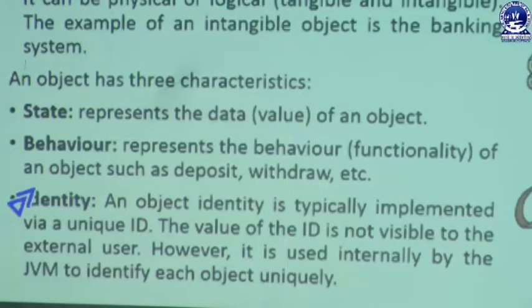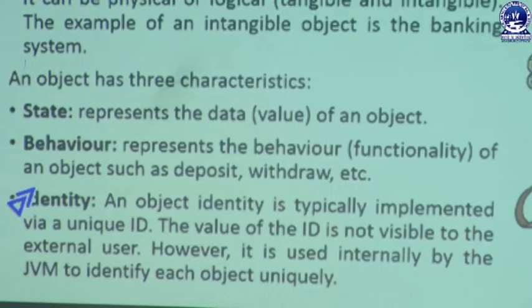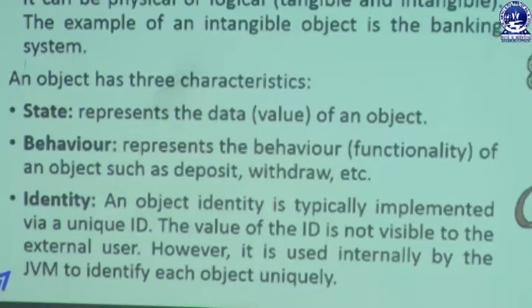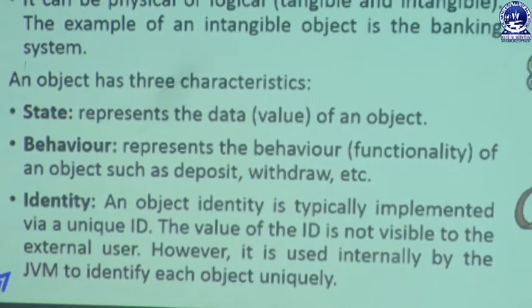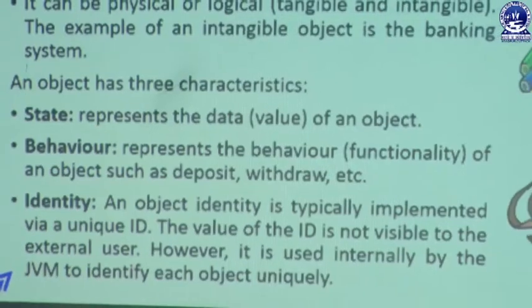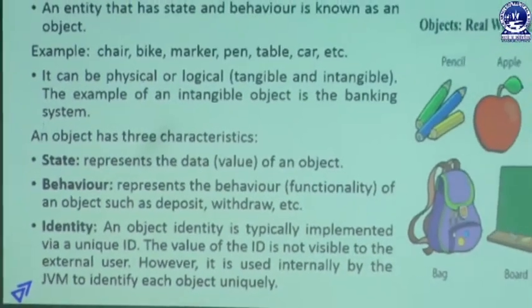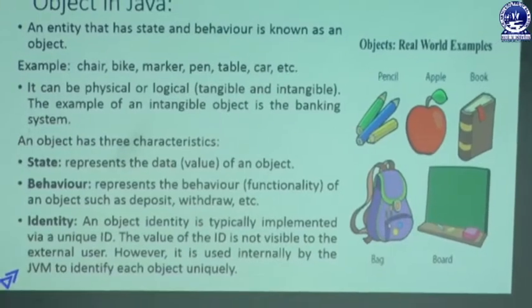Next is identity. An object's identity is typically implemented via a unique ID. With the help of that identity, we invoke a technique using a unique ID that helps to identify a specific type of object or specific variable present in our system. That is why an object is essential for a program.